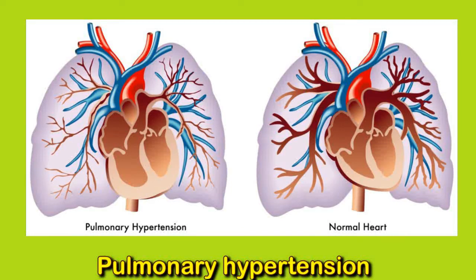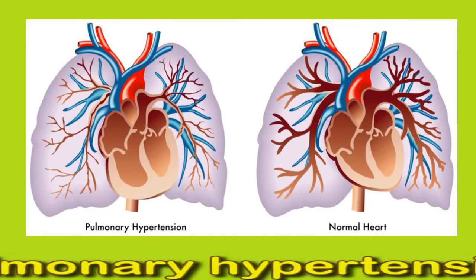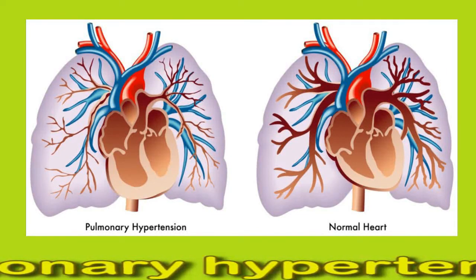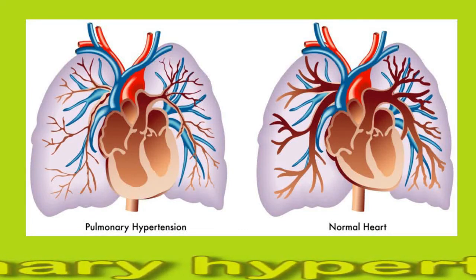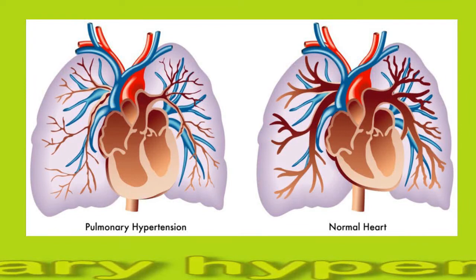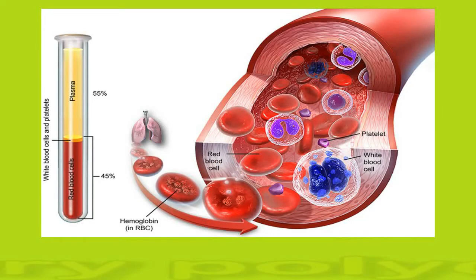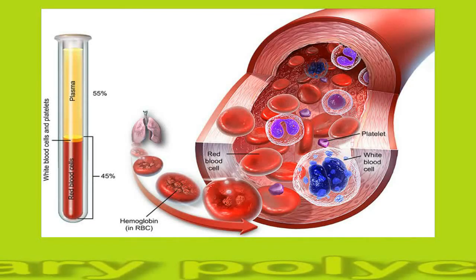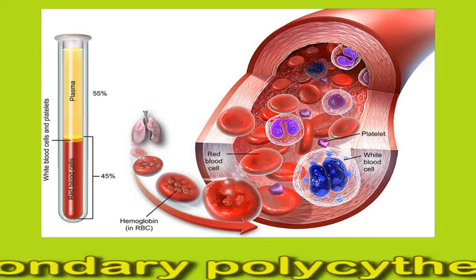This inflammation can cause high pressure to develop in these arteries, which is also known as pulmonary hypertension. This higher pressure means that the right side of the heart has to work harder to pump blood through those arteries. This can cause damage to the heart, making it weak.